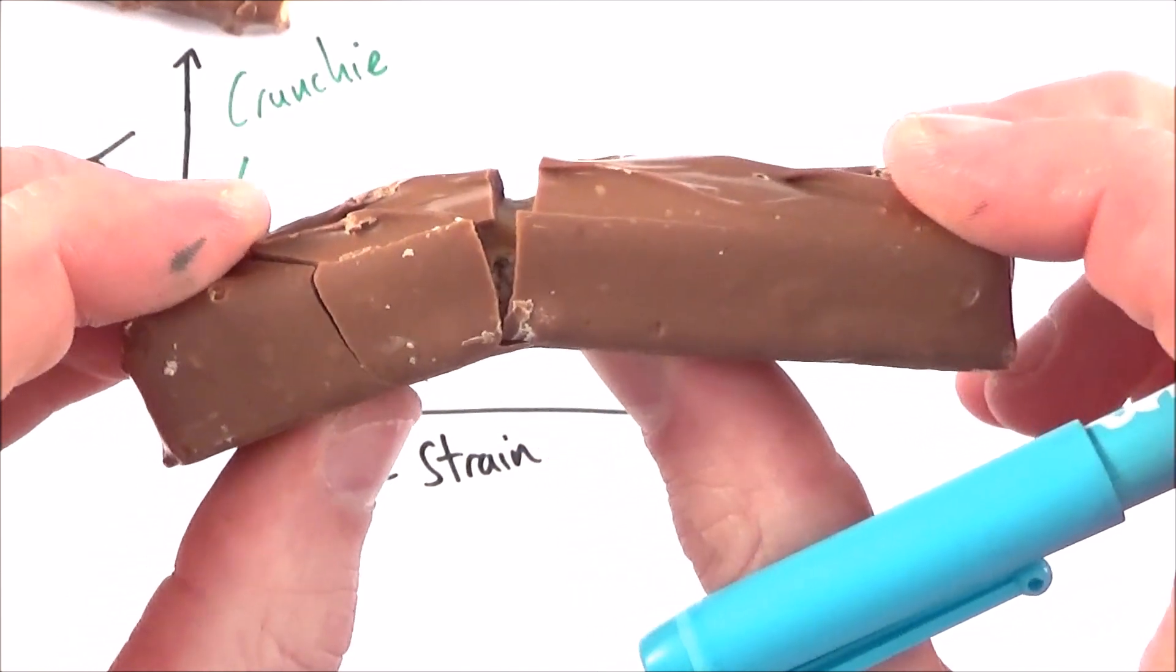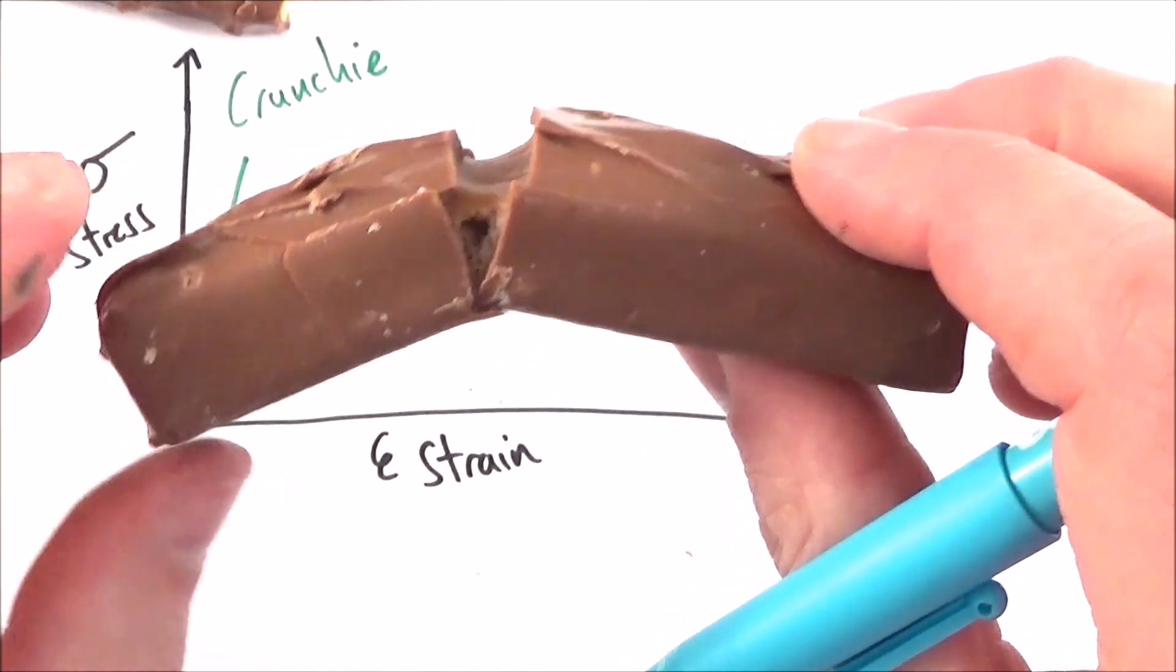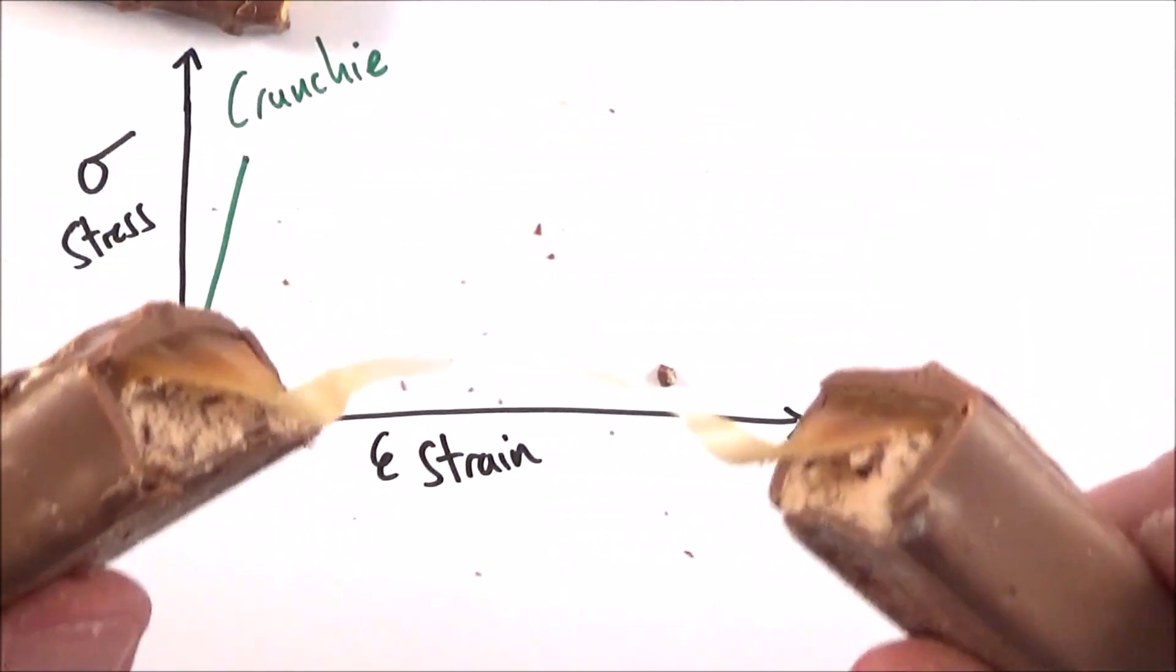What it tends to do is it tends to have this kind of region here, where it's not quite elastic anymore, it doesn't go back to the original shape. We have a region of plastic deformation, and as I move it, it's going to take a while before it actually breaks.